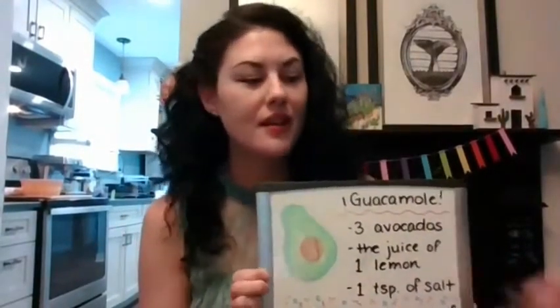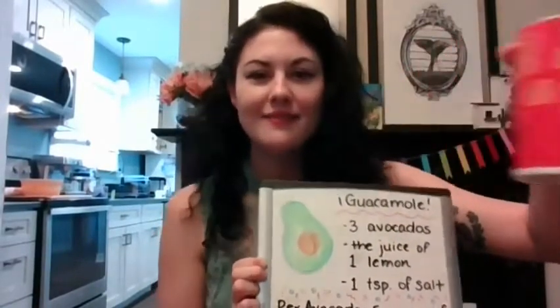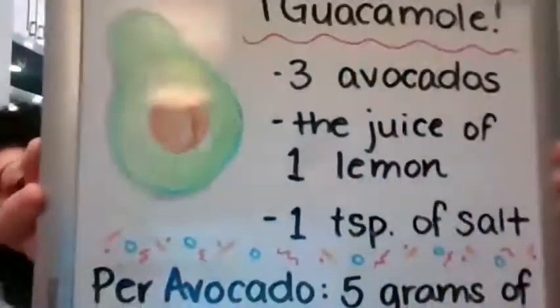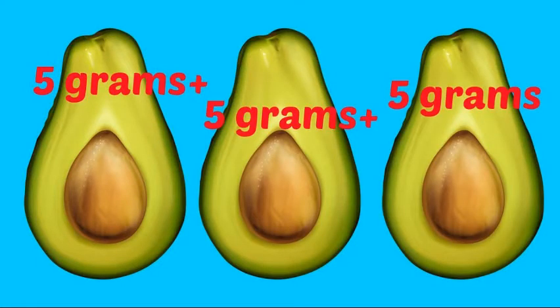So what's a really good source of HDL — the good fats? Well, something palatable to most people is guacamole. For a really simple guacamole you only need three ripe avocados, the juice of one lemon, and a little bit of salt. For each avocado we get 5 grams of HDL fat. So here's a little math: if each avocado has 5 grams of HDL fat, how many grams will we have in three avocados? 5 plus 5 is 10, plus 5 is 15 grams.